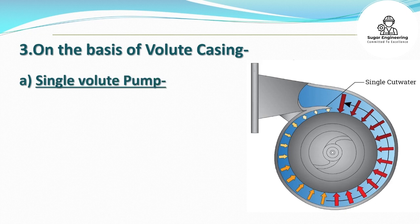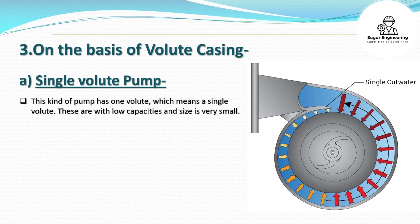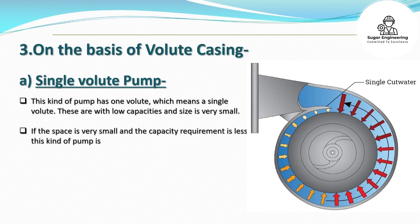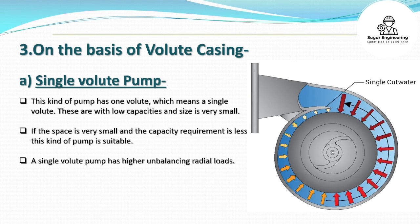On the basis of volute casing: A. Single volute pump. This kind of pump has one volute — a single volute. These pumps are of low capacity and very small in size. If the space is very limited and the capacity requirement is less, this kind of pump is suitable. A single volute pump has higher unbalanced radial loads.